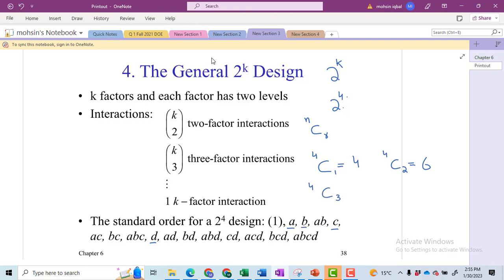Then 4C3. This is the three-factor interaction term just like ABC, ABD, ACD like this. And now this is equal to again 4.